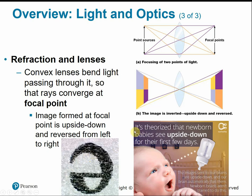It's theorized that newborn babies actually see everything upside down in their first few days of life. The images our brain receives are flipped and upside down, but brain processing corrects that so we see things right side up. It just takes a little while for babies' brains to develop this skill.